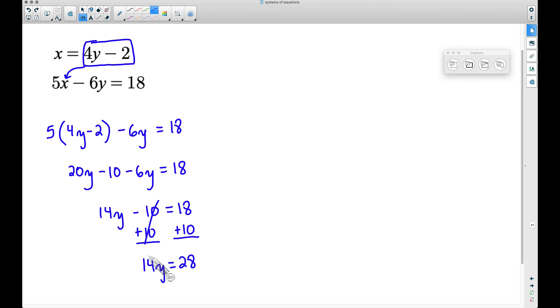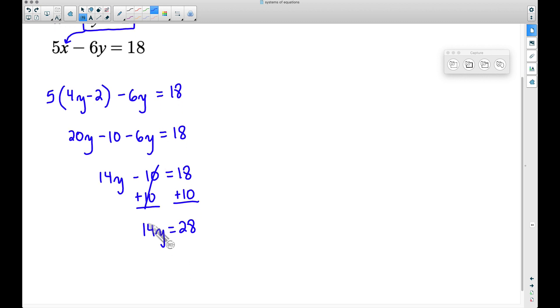And then finally, 14 times something gives us 28. In this case, maybe you do know that 14 times 2 gives you 28, but if you didn't, we can divide both sides by 14, so the 14s cancel out on the left-hand side and we have Y equals 2.